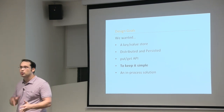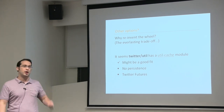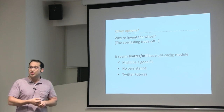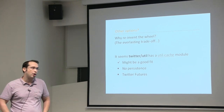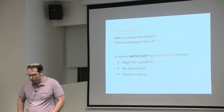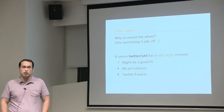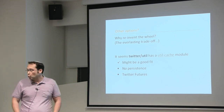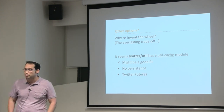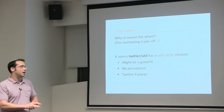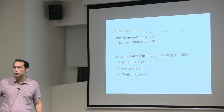We looked around because you don't want to reinvent the wheel. There's a trade-off: it depends on the task and how much wiring you need to do — if there's a lot of wiring, maybe it's not worth the effort, and if your task is straightforward, just write it yourself. We looked at Twitter Util — it has a nice cache module that could be a good fit, but it has no persistence, only caching, and it uses Twitter Futures rather than standard Scala Futures, which we weren't comfortable with.